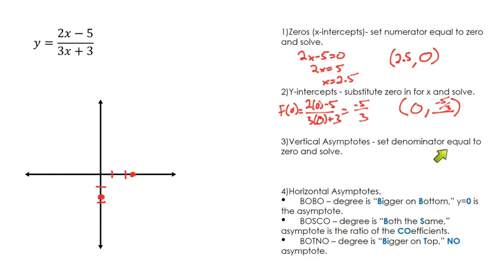Vertical asymptotes. To do that, we're going to set the denominator equal to zero and solve. I'm going to figure out what makes the denominator zero, because there's going to be a vertical asymptote there. A function is undefined at that value. So if I set 3x plus 3 equal to zero and solve, we have 3x equals negative 3 once I subtract 3 from each side. Then once I divide by 3 on each side, we get that x equals negative 1. That means at negative 1, we have a vertical asymptote.